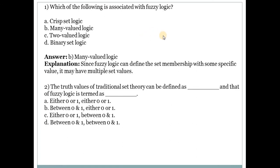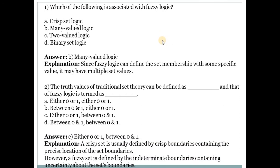Next question is: The truth values of traditional set theory can be defined as dash and that of fuzzy logic is termed as... Answer is C, either 0 or 1 and between 0 and 1. So for traditional set theory, that is crisp set, is between either 0 or 1. Crisp set gives values between 0 or 1, whereas fuzzy logic gives values between 0 and 1.